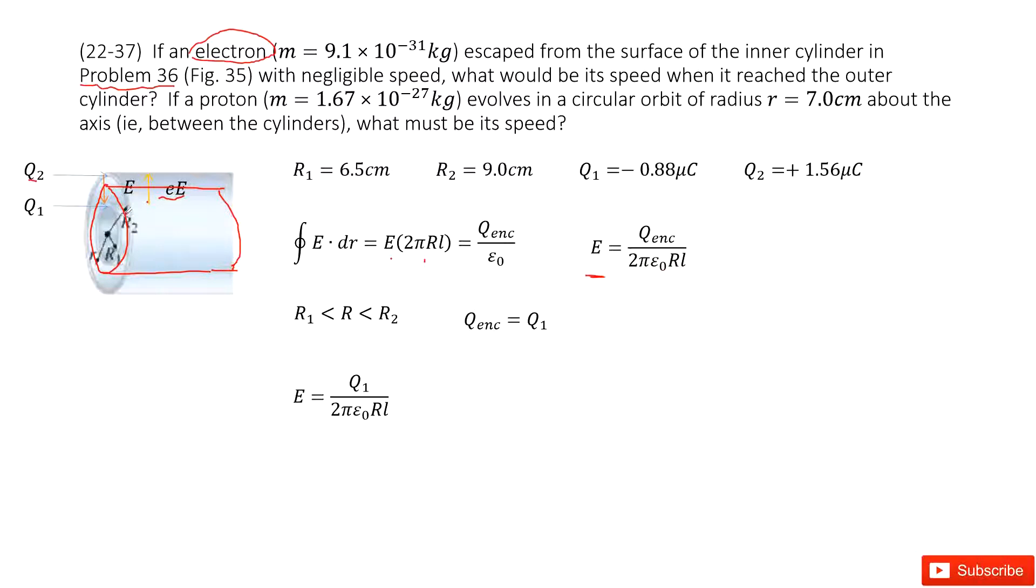Now we look at this Gaussian surface. What charge is enclosed? Q1. Just Q1. So then we input the Q1 inside. We get the electric field. It looks like this one.